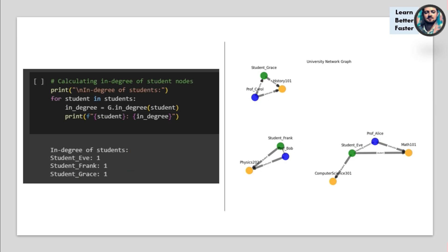If you wanted to see something like the in-degree of the students, right here we can see Eve, Frank, and Grace all have an in-degree of one. It's from the professor to the student — so from Carol to Grace, Bob to Frank, and Alice to Eve.